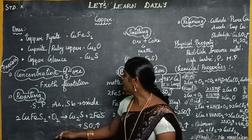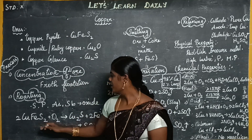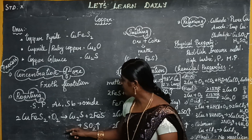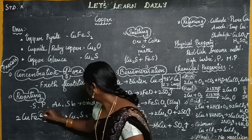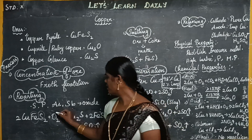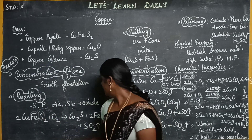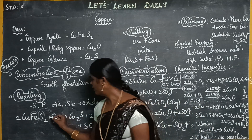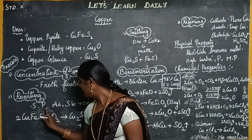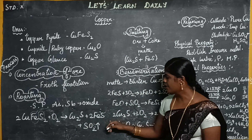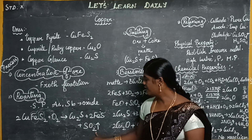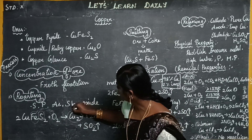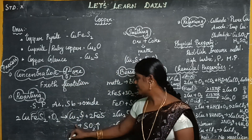Copper pyrite is CuFeS2. In this case, we will extract oxygen from the oxide. Plus O2, it will be removed from the oxide. Cu2S plus 2FeS plus SO2 — oxygen will be removed from the oxide. Then FeO plus SO2. That is sulfur dioxide gas. Cu2S — that is copper matte. So copper matte is formed. Okay.